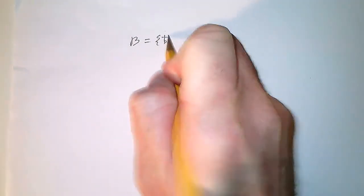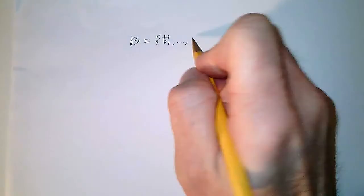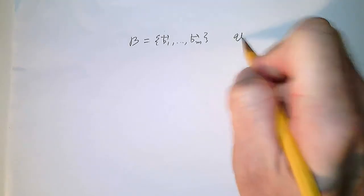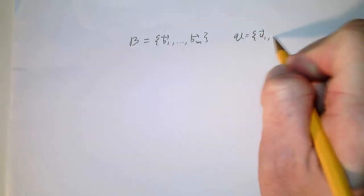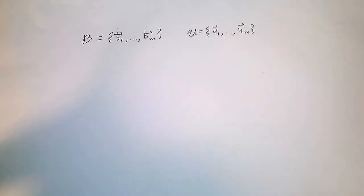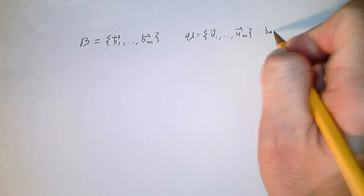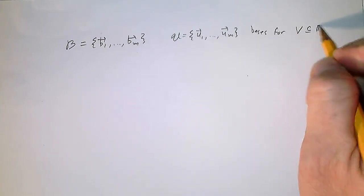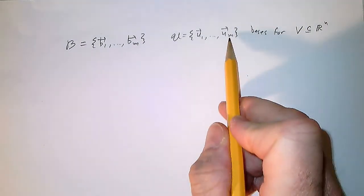I want to talk about a change of basis matrix. The setup is that we have two different bases. One is called B with vectors B1 through Bm, and the other basis I'll call U with vectors U1 through Um. The key idea is that these are both bases for the same space — let's say they're both bases for some space V, which is a subspace of Rⁿ.